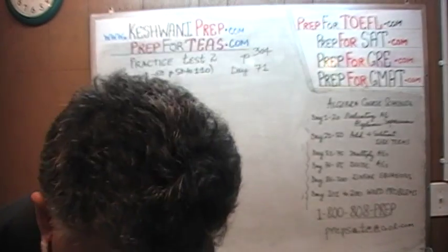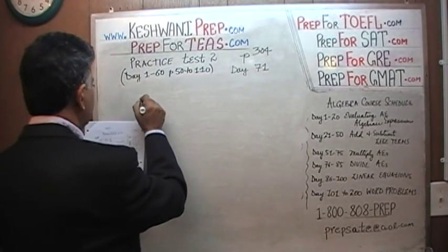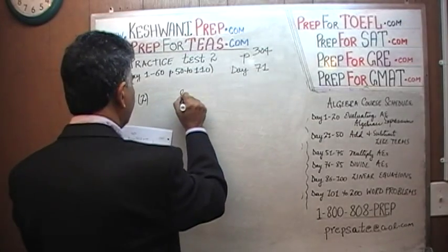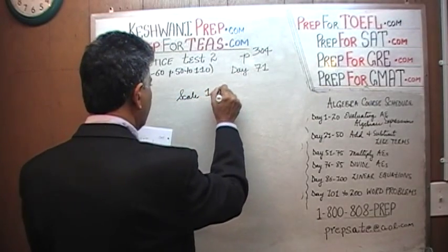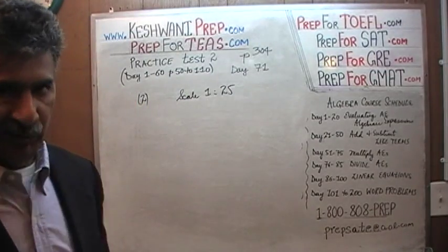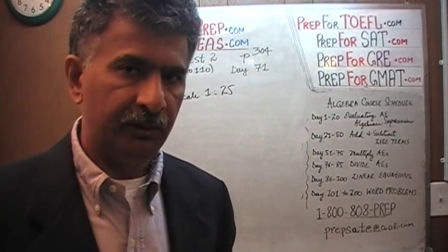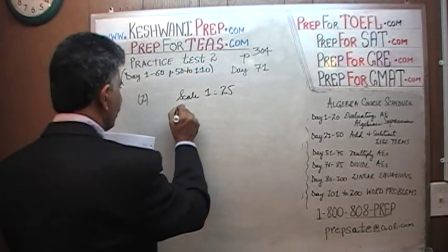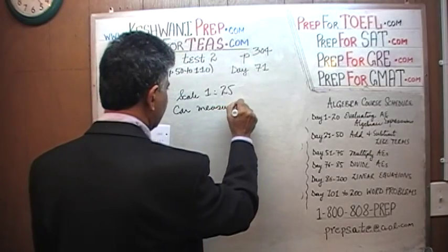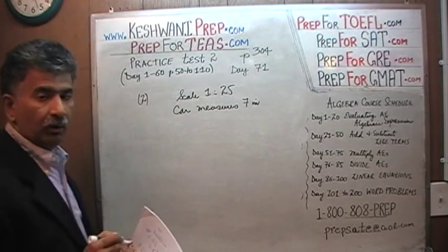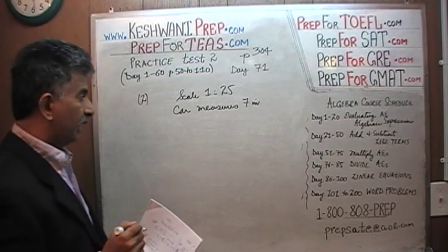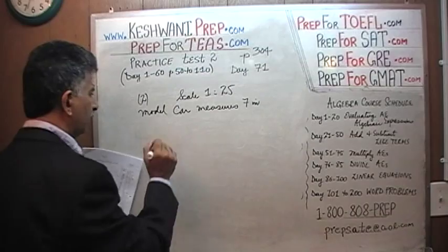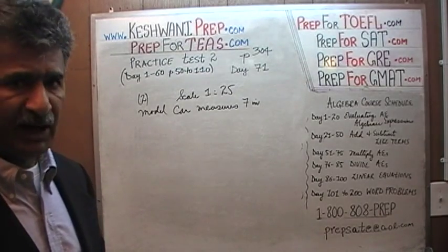In question number 2, we are told that we have a scale that we are using to build a model of a car — a model of an actual car. The scale is 1 to 25. In other words, if it appears as 1 inch in the scale version, in the real version it is 25 inches. We are told that the model car measures 7 inches. What is the length of the actual car?